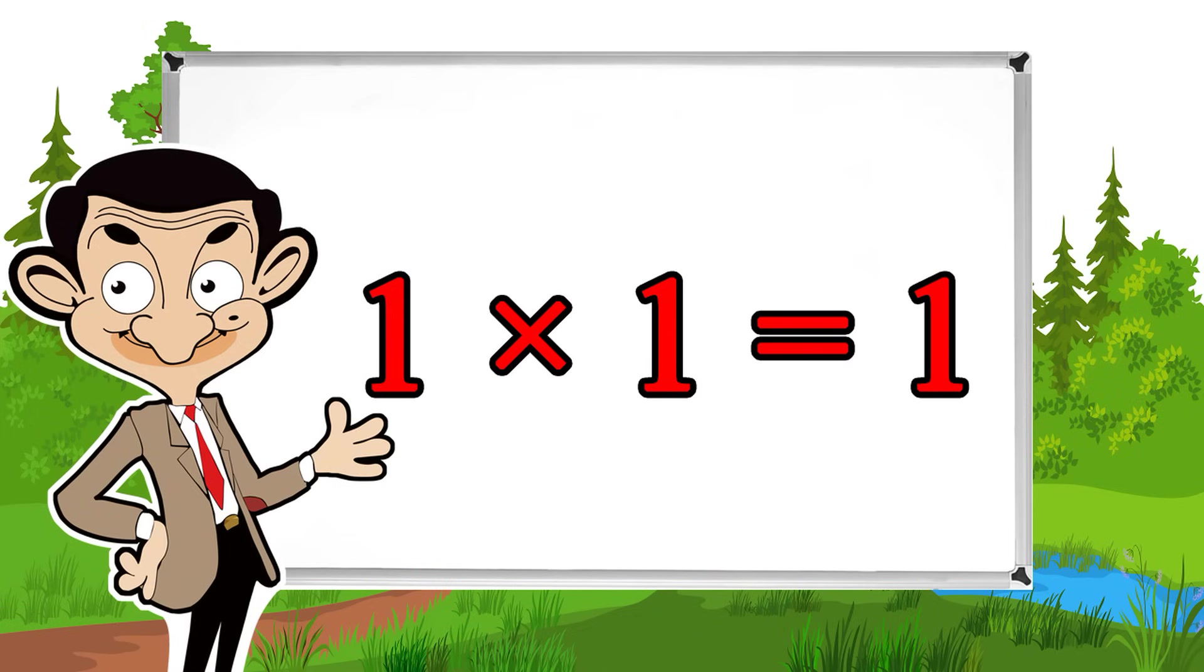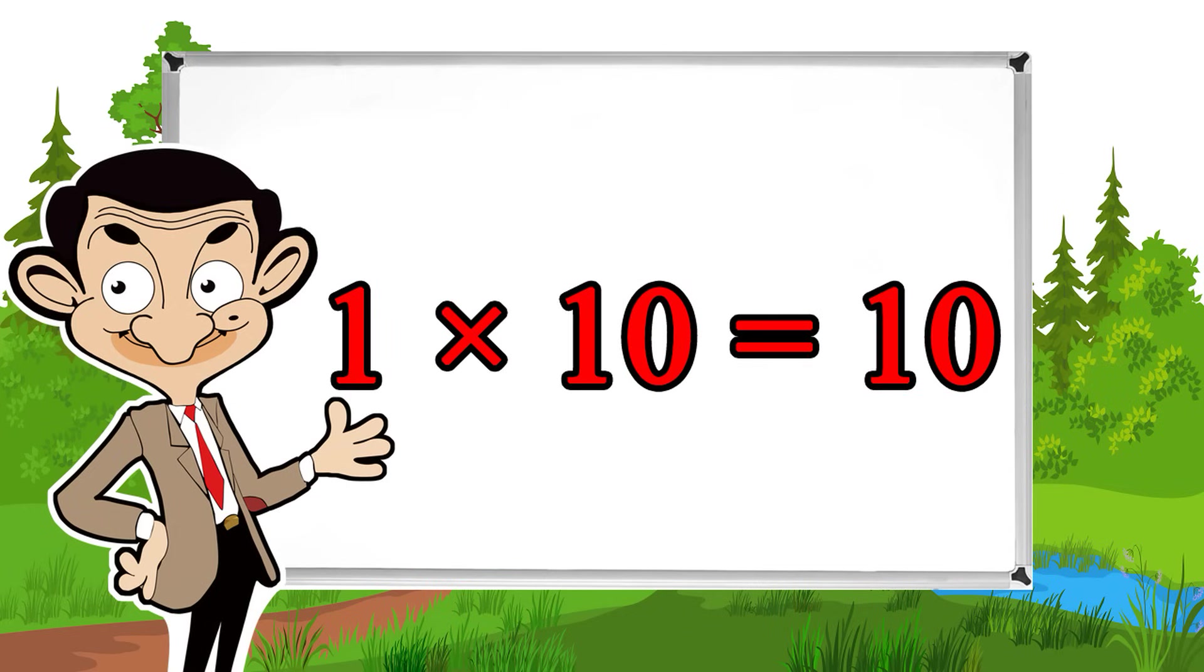1 times 1 equals 1, 1 times 2 equals 2, 1 times 3 equals 3, 1 times 4 equals 4, 1 times 5 equals 5, 1 times 6 equals 6, 1 times 7 equals 7, 1 times 8 equals 8, 1 times 9 equals 9, 1 times 10 equals 10.